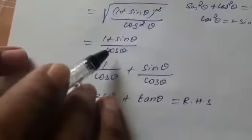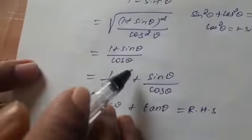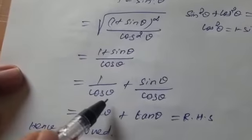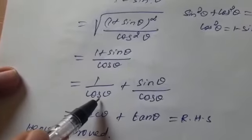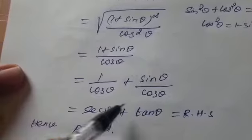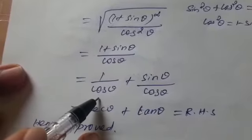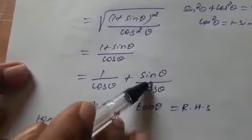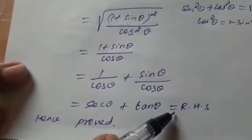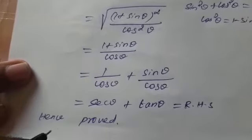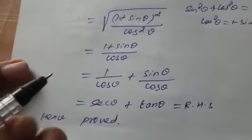Dividing through, we get 1 by cos theta plus sin theta by cos theta. So, 1 by cos theta is sec theta and sin theta by cos theta is tan theta, which equals RHS. Hence proved.